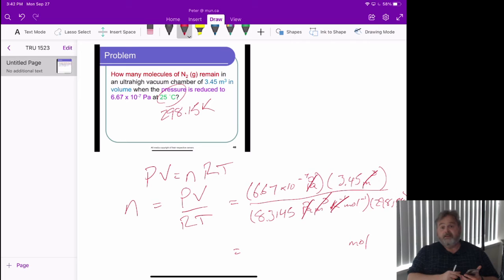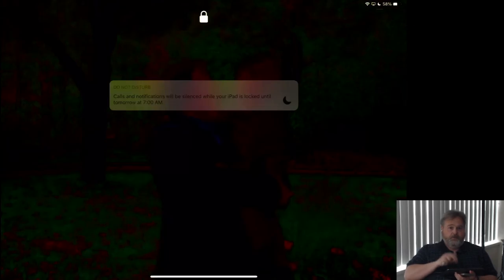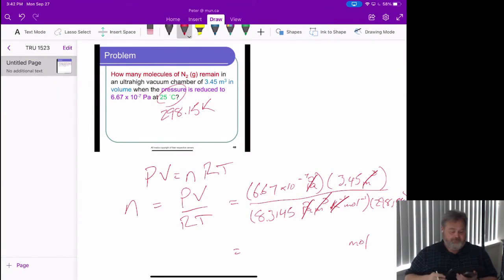6.67 times 10 to the minus 7 times 3.45 divided by 8.3145 divided by 298.15. And what I get is very, very small. I wish it was showing it to me in scientific notation right now, but it's not. So, I am going to have to see if I can convert that. What I'm getting is 9.28 times 10 to the minus 10 moles. So, yeah, that is a very small number of molecules. This is probably one of the smallest numbers of moles you've actually seen in my calculation to this point.